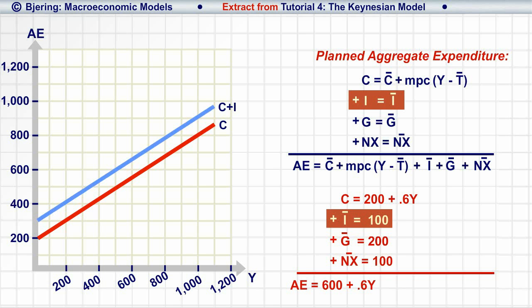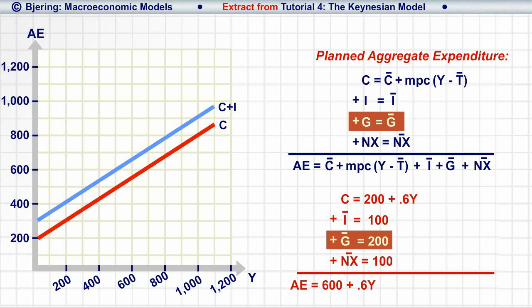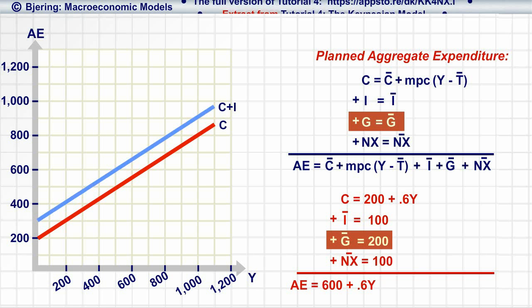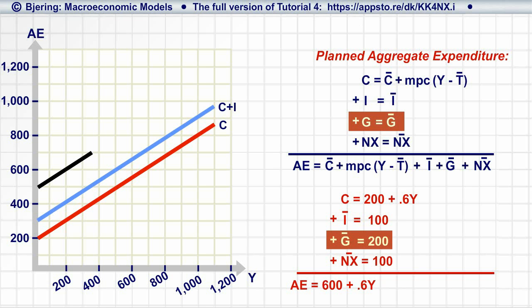Turning to government expenditure, G, G is also assumed exogenous, at G-bar. So we add the function for government expenditure to the graph parallel to and on top of the C-plus-I line.